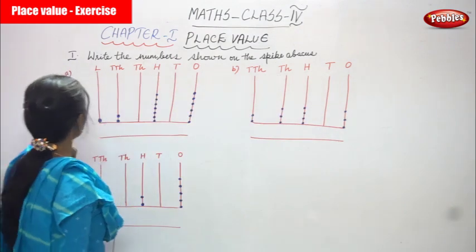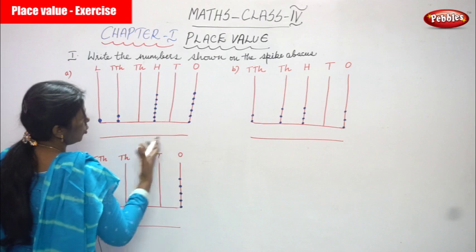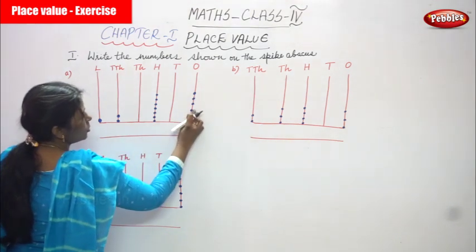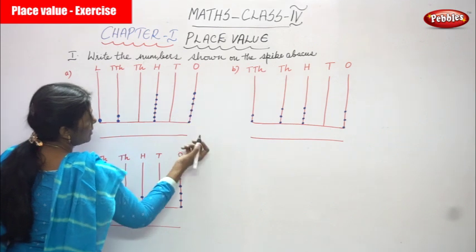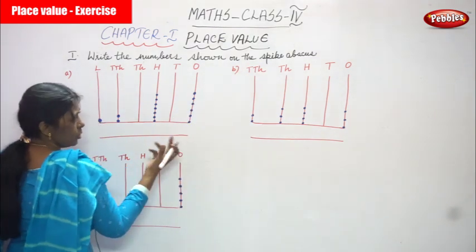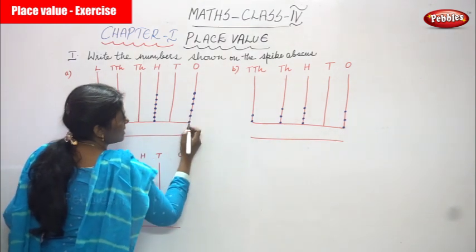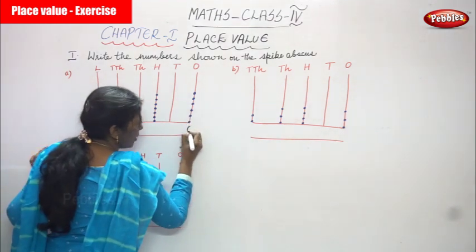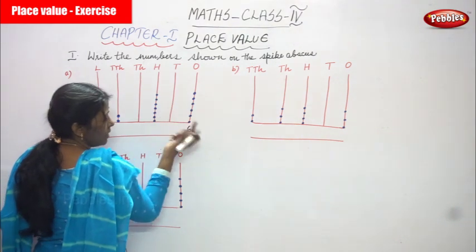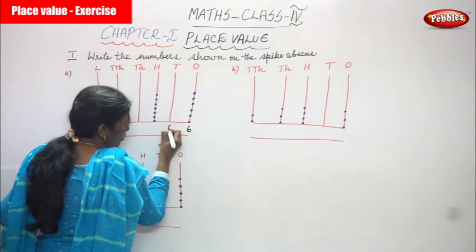First term — that is term A. We start with the ones place always. Counting the dots: 1, 2, 3, 4, 5, 6. So there are 6 dots — you can consider them as balls on the abacus. In the tens place, there are no balls, so you have to put 0.